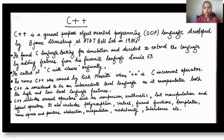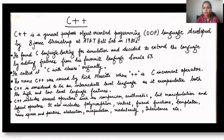C++ features include many operators such as arithmetic calculations — addition, subtraction, multiplication, division, remainder, and modulus. You can do comparison, bit manipulations, and logical operations. Logical operations involve binary operations: AND gate, OR gate, and NOT gate. C++ also includes polymorphism, virtual functions, templates, namespaces, pointers, abstractions, encapsulations, modularity, and inheritance. These terms will be dealt with in later sections.